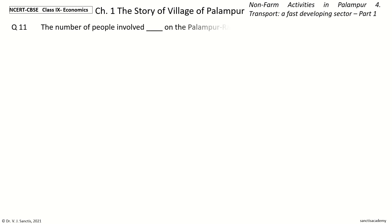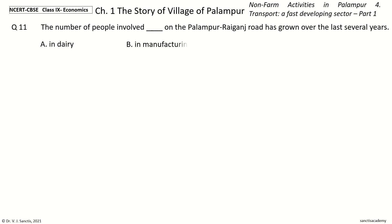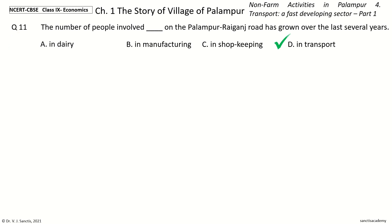Question 11: The number of people involved in dash on the Palampur-Raiganj road has grown over the last several years. The options are: In Dairy, In Manufacturing, In Shopkeeping, In Transport. And the answer is In Transport. So, the number of people involved in transport on the Palampur-Raiganj road has grown over the last several years.